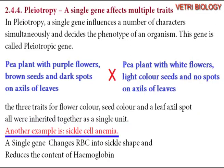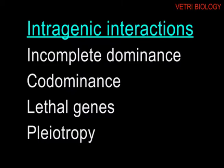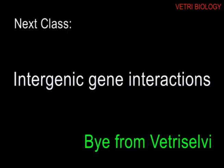Another example of pleiotropy is sickle cell anaemia, where a single gene affects red blood cell shape, haemoglobin structure, and multiple physiological characters simultaneously. So far we have seen intragenic interactions. In the next class, let us learn intergenic interactions. Thank you, children.